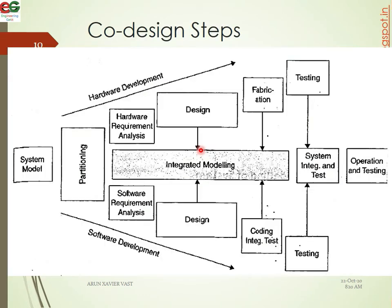The main level steps in co-design are: first, the system model, then the model design, then partitioning into a hardware portion and a software portion. The hardware requirement is analyzed, followed by software requirement and software development.